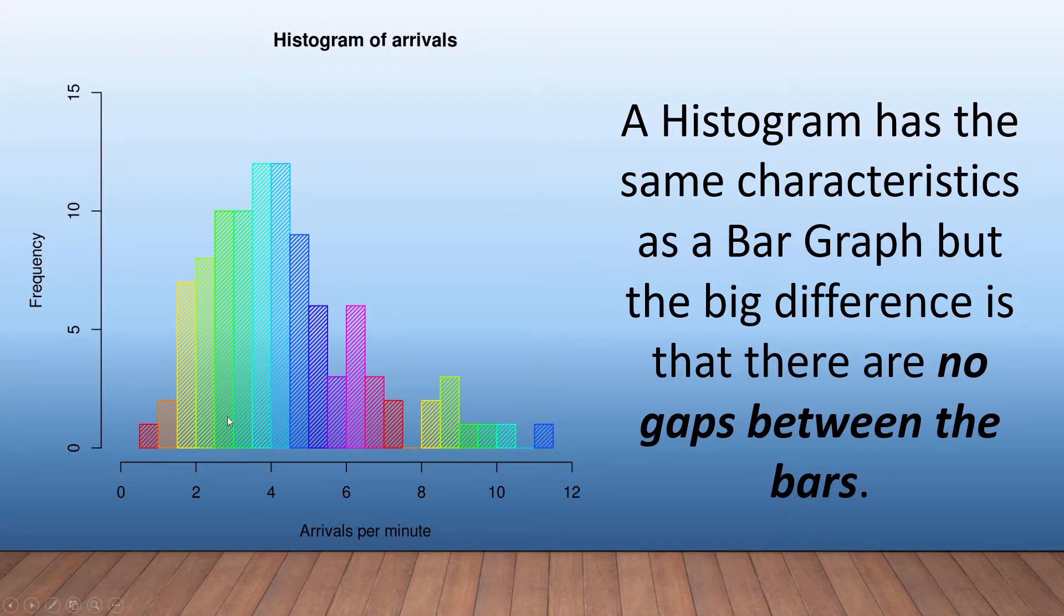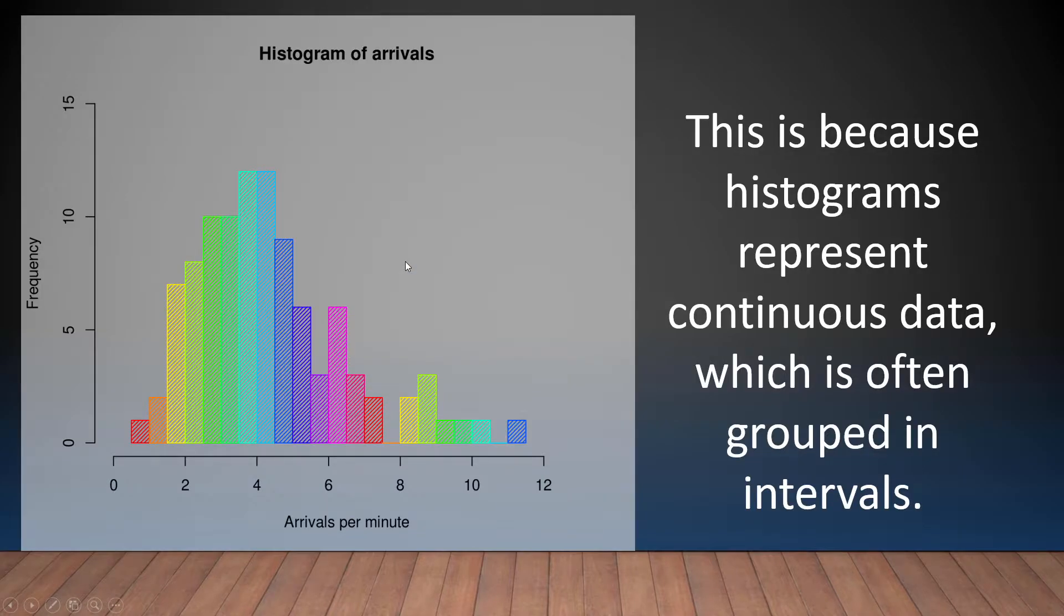On the left-hand side we'll see what a histogram looks like. It looks similar to your bar chart and bar graph. However, even though it has the same characteristics as a bar graph, the big difference is that there are no gaps between the bars. You can see here absolutely no gaps, and there's a reason for that.